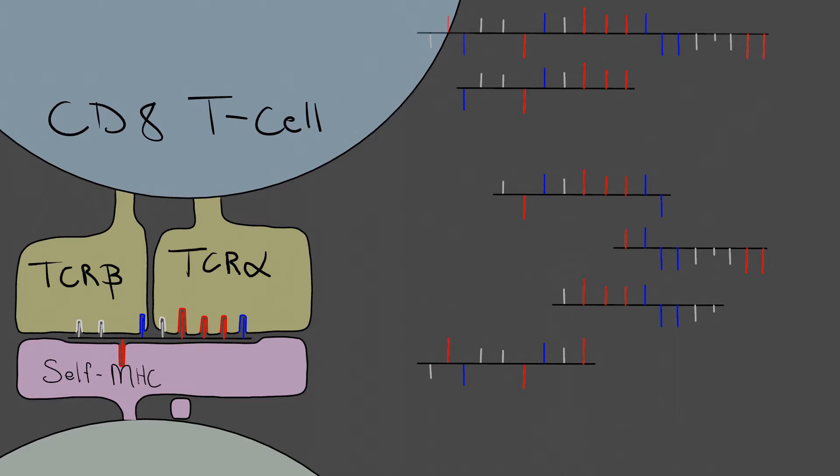Normally, reaction to self proteins does not occur because of negative selection in the thymus. T cells which have receptors for self peptides should never make it to the periphery. We can demonstrate this by labeling the cell on the bottom of the page as a thymic dendritic cell.